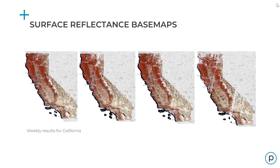Here we have four surface reflectance basemaps over California. Each basemap represents a seven-day time period, and all of the data in the basemap are taken strictly from within each time period designated. You can see how this can be a very useful tool for time-dependent applications that need quantitative metrics including agriculture, forestry, climate studies, and more.